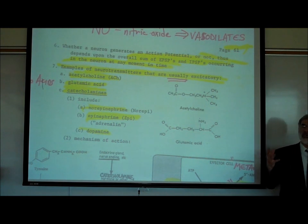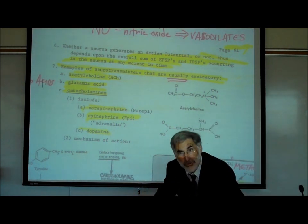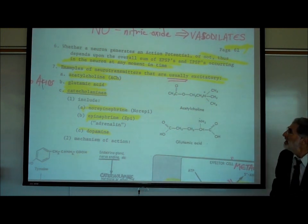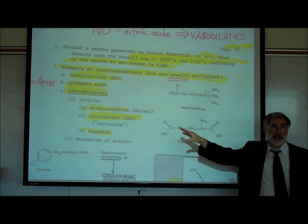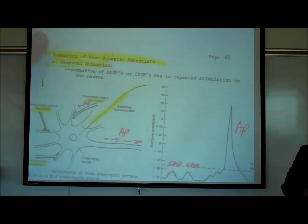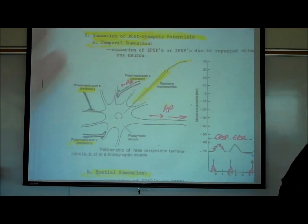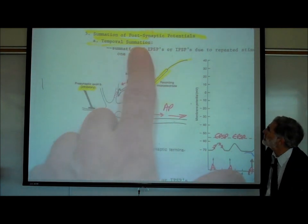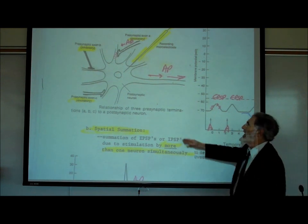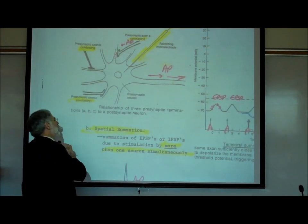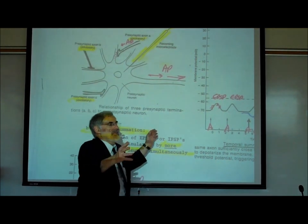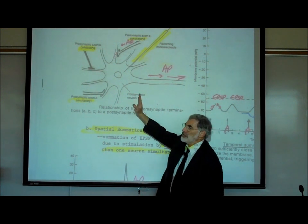This explains why we need not only excitatory influences but inhibitory influences as well. We're going to name some of these chemicals in a moment, but first let's go back to page 60 to talk about summation of postsynaptic potentials.